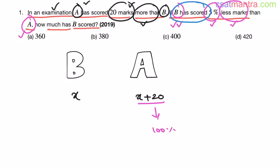Now, B has scored how much? X. This is equal to 5% less, 5% less of A's marks. That is 95%. 95% of A's marks. That is X plus 20.